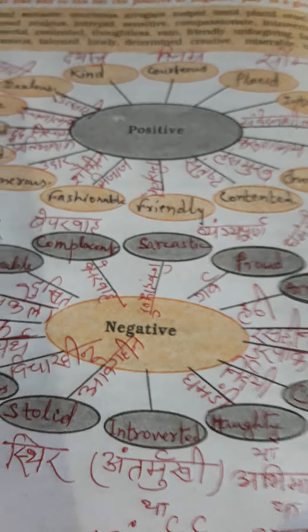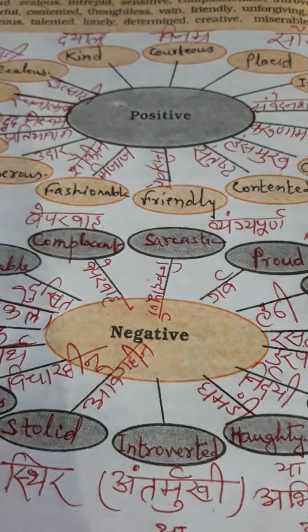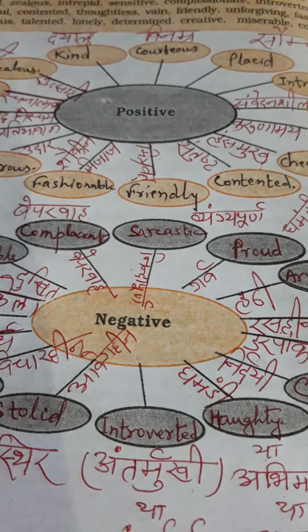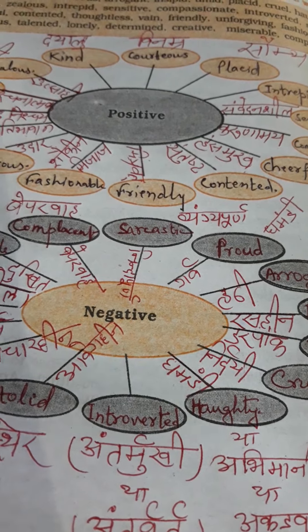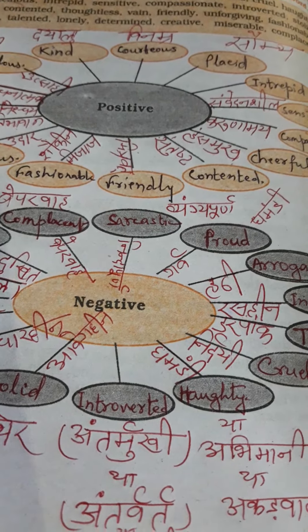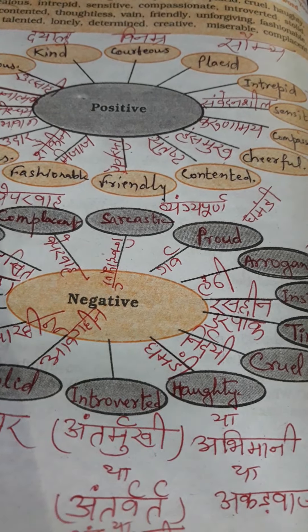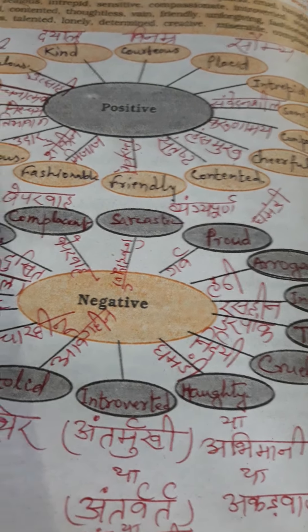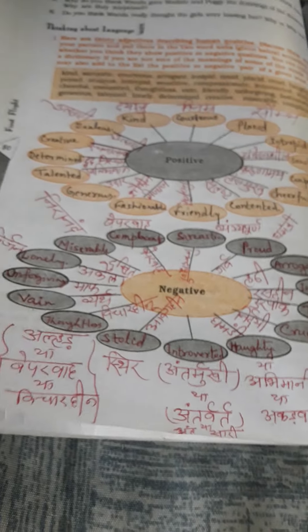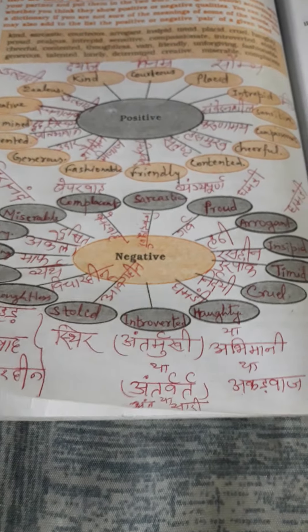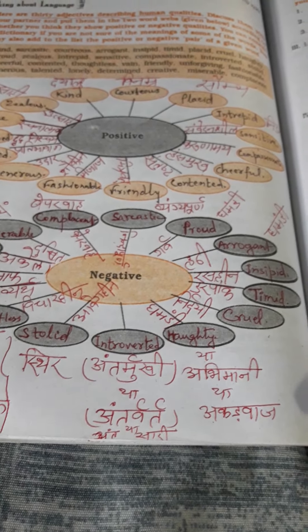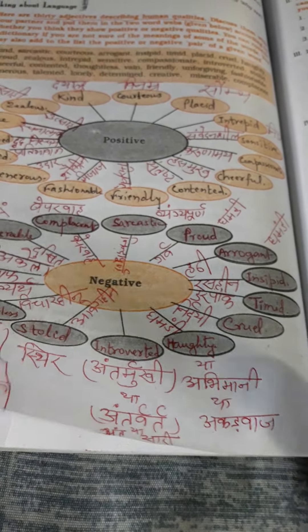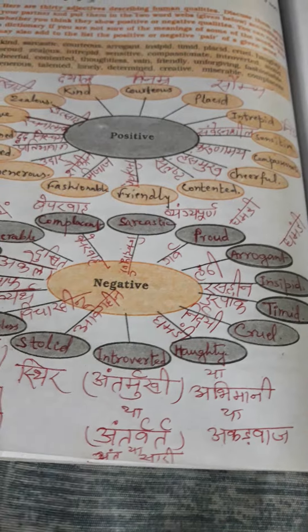In this way you have to arrange this given group of words respectively in positive and negative waves. Make sure to note it down and get it checked so that you can use all these words in sentences properly.